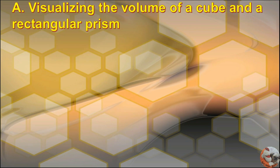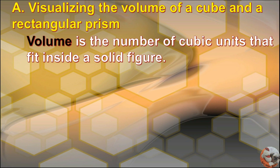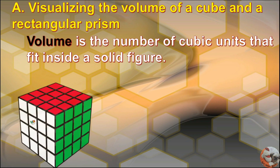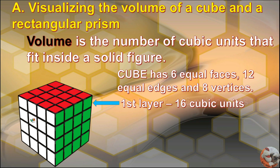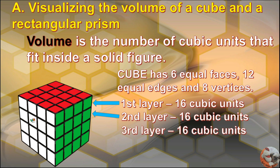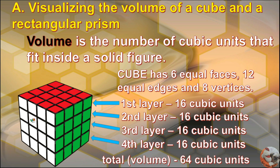A. Visualizing the volume of a cube and a rectangular prism. Volume is the number of cubic units that fit inside a solid figure. A cube has 6 equal faces, 12 equal edges, and 8 vertices. The first layer has 16 cubic units, the second layer also has 16 cubic units, the third layer has 16 cubic units, and the fourth layer has 16 cubic units. The total volume of the cube is 64 cubic units.